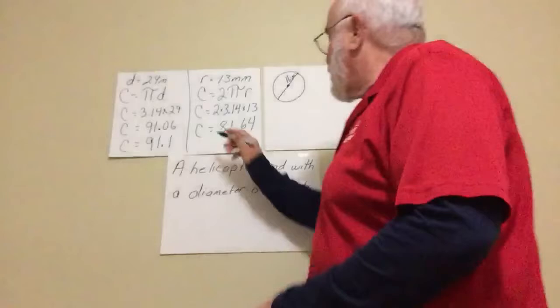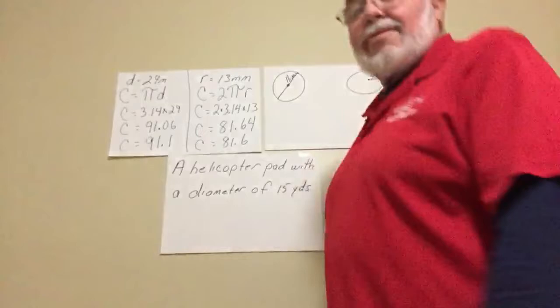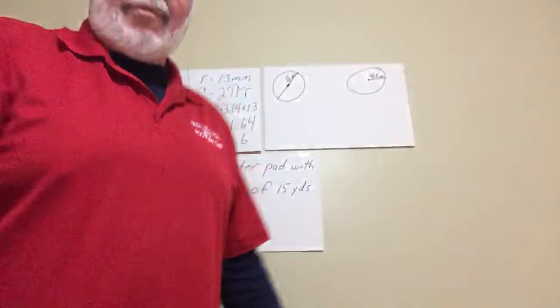And if we round to the nearest tenth, circumference equals 81.6. That's if they give us the diameter and give us the radius just as a number by itself.